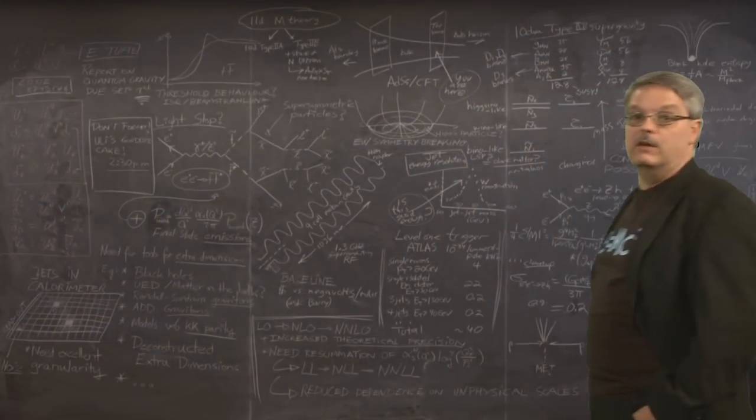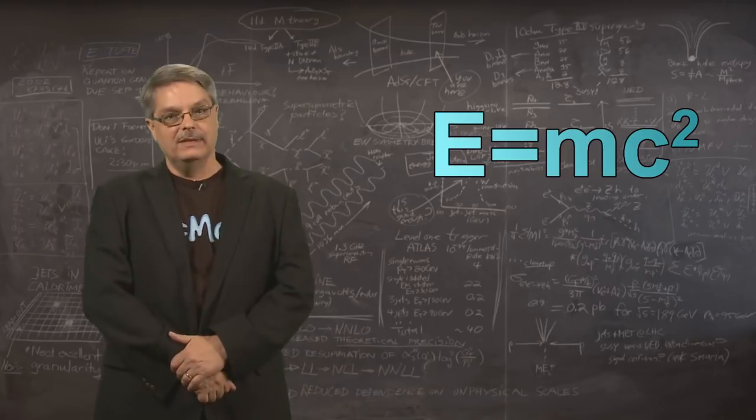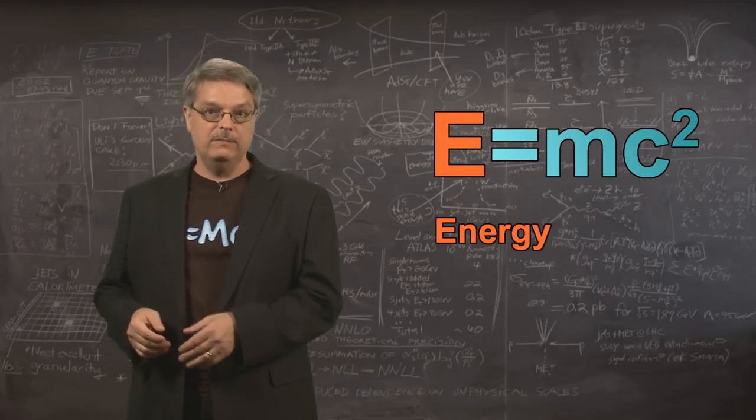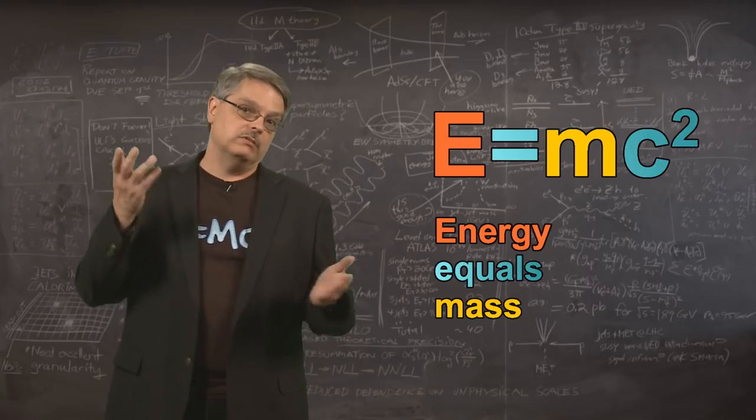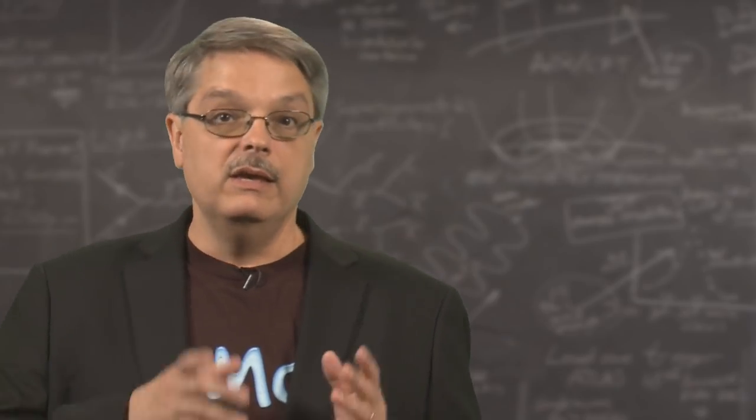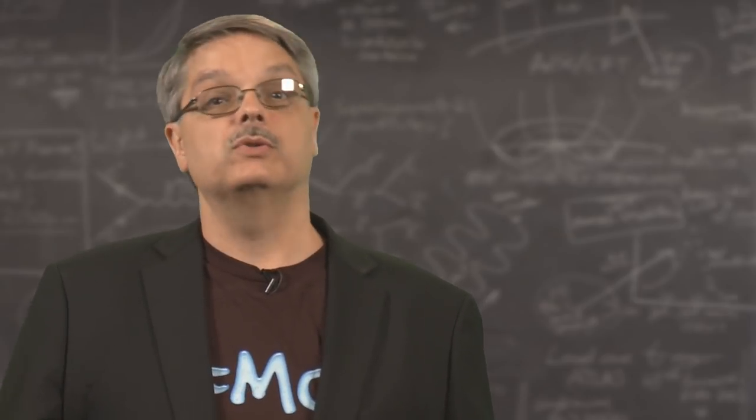The best-known equation in all of science is Einstein's famous E equals mc squared. Stated simply, the equation says that energy, which is the E, equals mass, which is the M. The c squared term is just a conversion factor, like when you convert feet to meters. The understanding that mass and energy were the same was a revolutionary idea, but that's only part of the story.